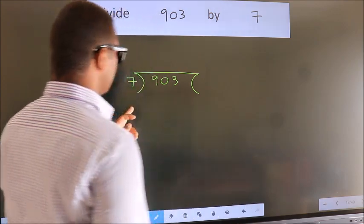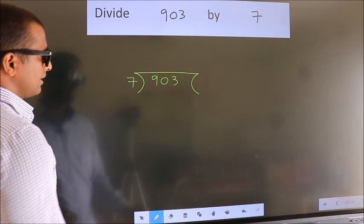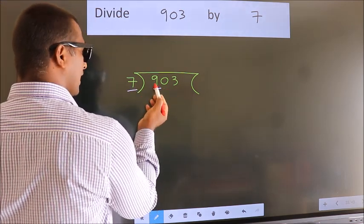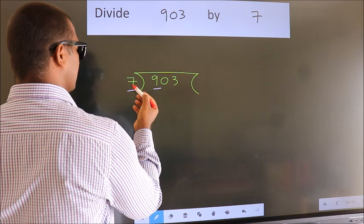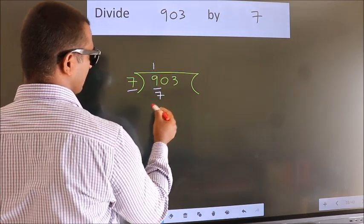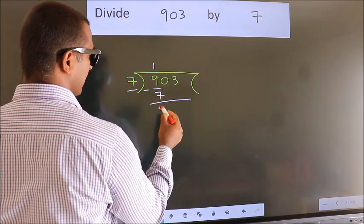This is your step 1. Next, here we have 9, here 7. A number close to 9 in 7 table is 7 once 7. Now, we should subtract. We get 2.